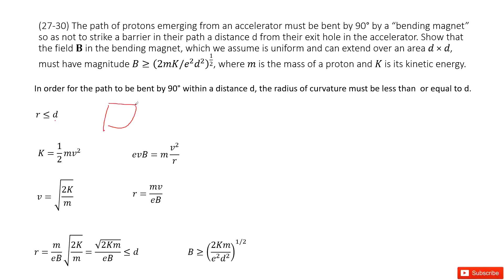This is a square, and when it wants to move 90 degrees, this radius must be smaller or equal to d. This is the quantity we get.